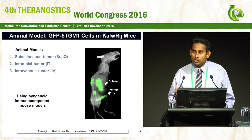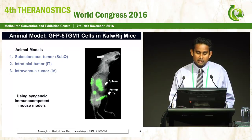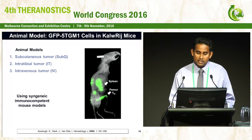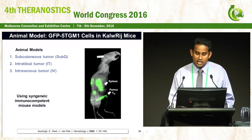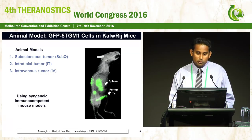The cells are injected IV and this was imaged four weeks later. You can see the spleen and the tumor generated in the femur light up nicely with the green fluorescent protein.